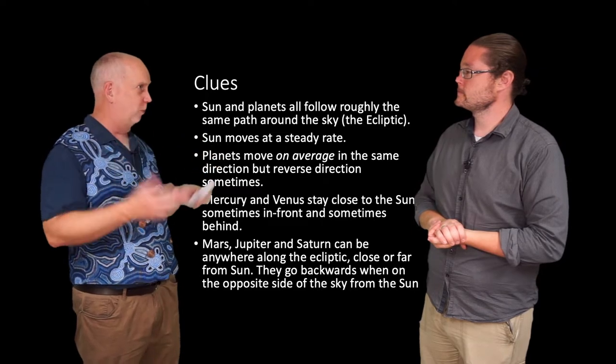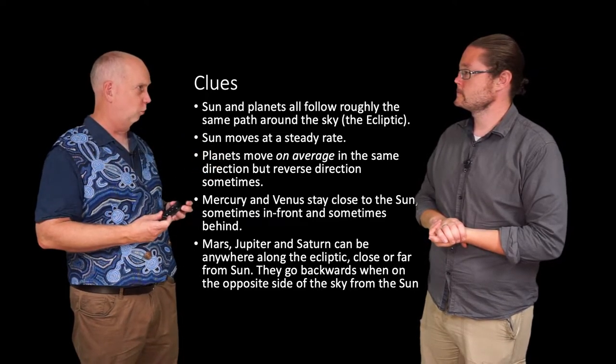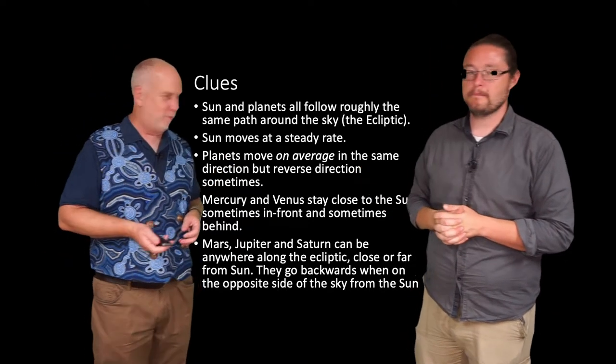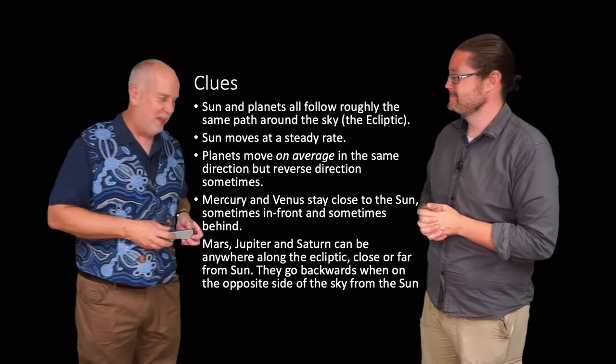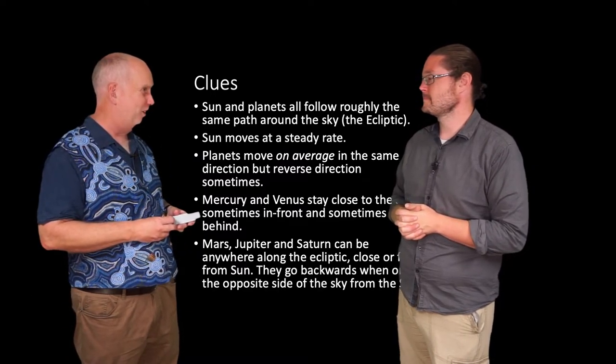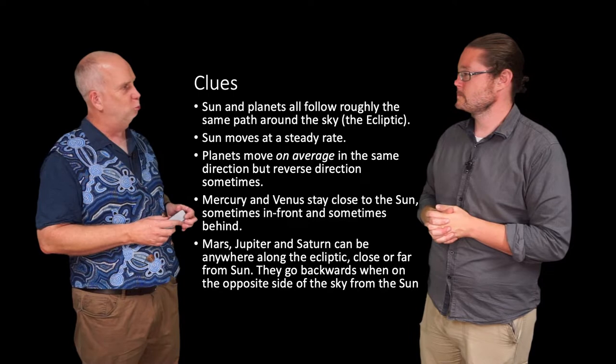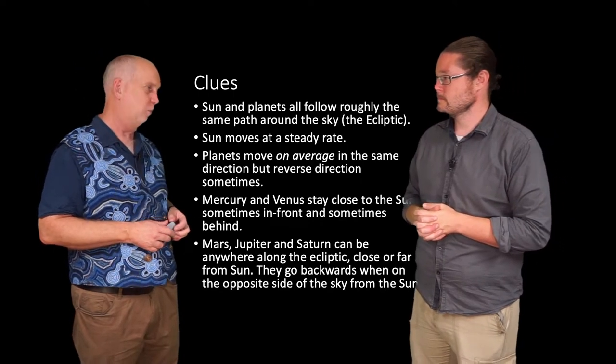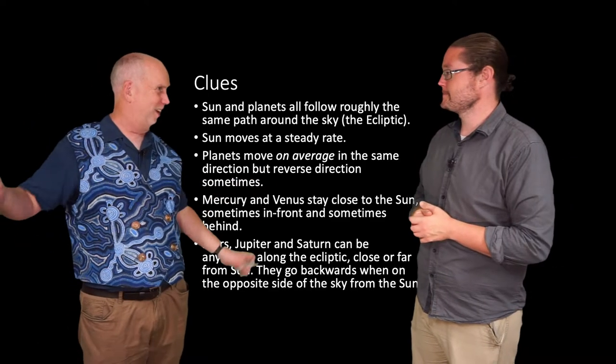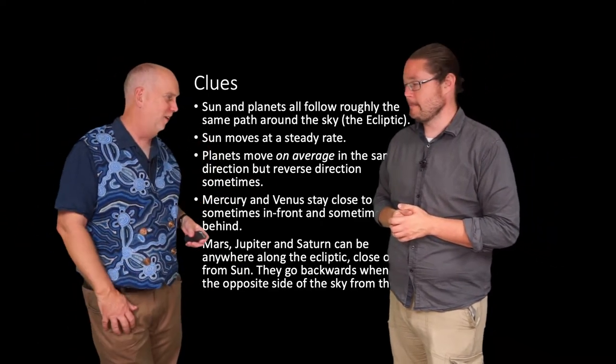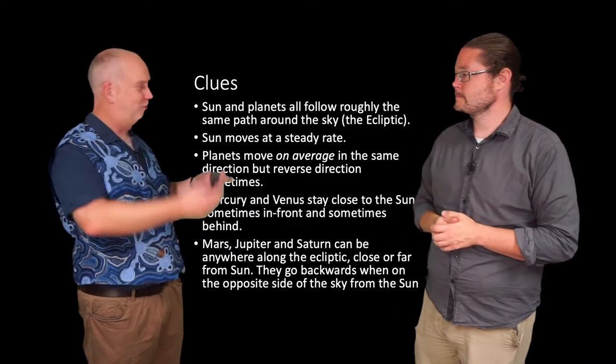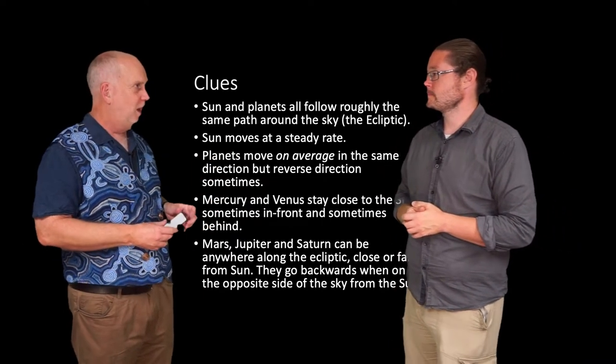As the planets wandered around, for a very long time people cared because they thought, well, if Mars is in Taurus then you're going to meet a tall dark handsome stranger or have your bin stolen or whatever it might be. And so what people really cared about was knowing which planet was going to be where at what time.